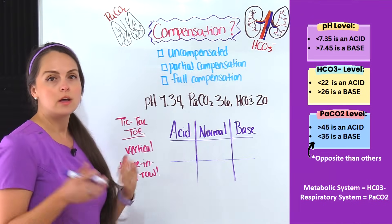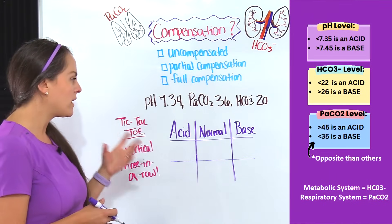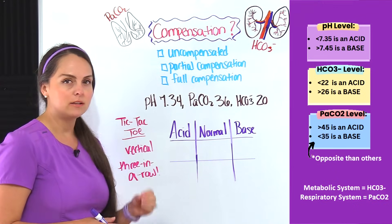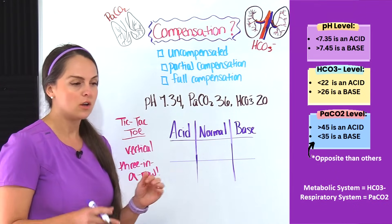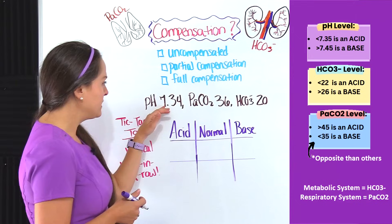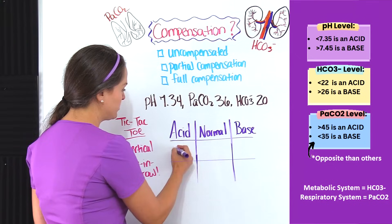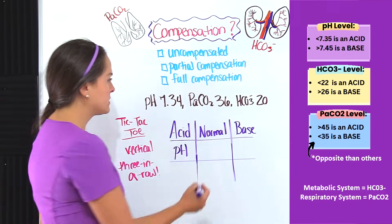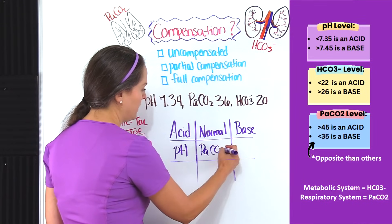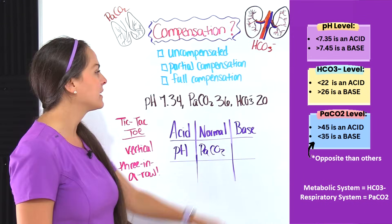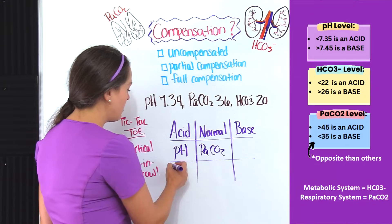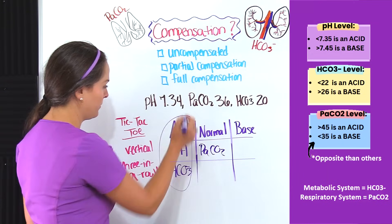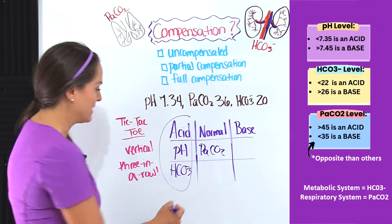I'm going to use tic-tac-toe to help us do this. What I'm looking for is a vertical three in a row. If I don't have an up-and-down three in a row, I know I'm dealing with full compensation. Our pH is acidic, so we put it under acid. Our PaCO2 is normal, so it goes under normal. Our bicarb is 20, which is on the acid side, so it goes under acid. I have a three in a row, so I know I have metabolic acidosis.